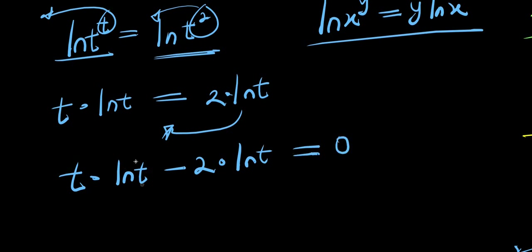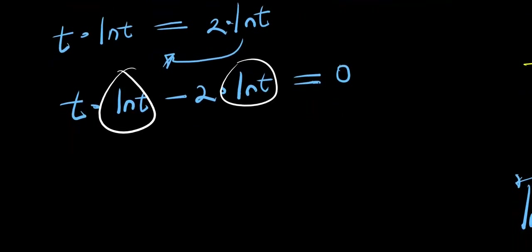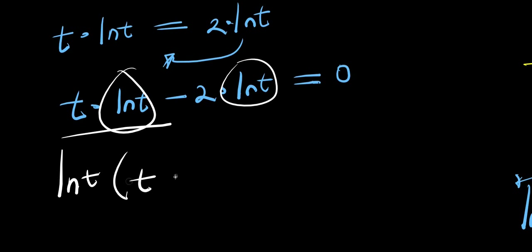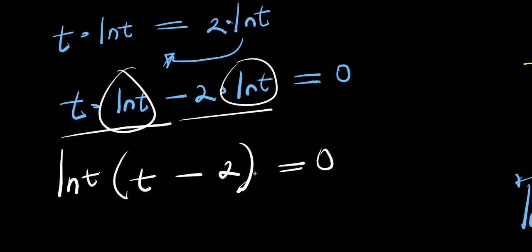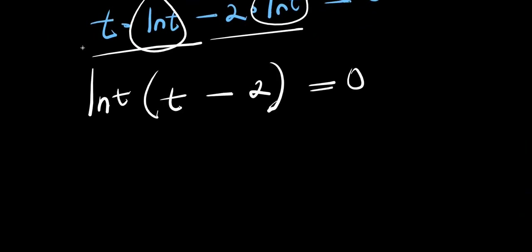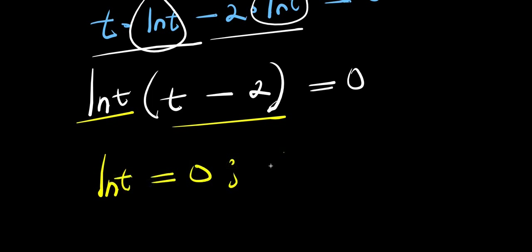What I need to do is factor out the common term, which is natural log of t. So I will have natural log of t times t minus 2 equals 0. We can now equate each factor to 0: natural log of t equals 0, and t minus 2 equals 0.